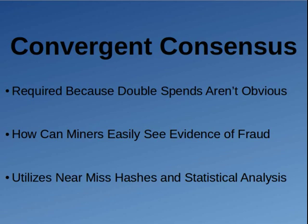The reason why convergent consensus is needed is because things like double spends and fraud within the blockchain aren't obvious. You can do theoretical calculations or models — like, what if 90% of the network is honest and 10% is malicious — but those models work in a classroom setting. In the real world, you don't know how many miners are honest or malicious. Convergent consensus adds evidence to the blockchain that allows miners to find fraud.